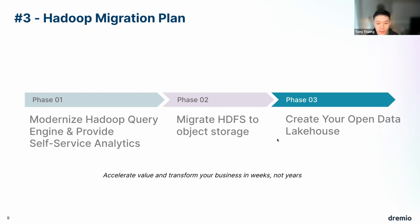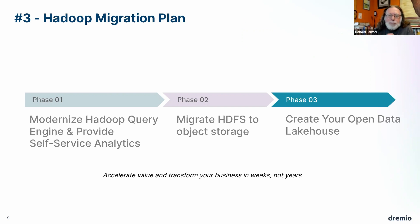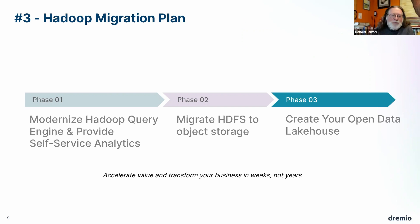We typically see customers go two routes for phase two: cloud object storage like AWS S3, or S3-compatible on-prem object storage. These migrations take time — not the next day you'll be fully migrated — but this approach maintains business continuity. Phase three is creating the open data lakehouse, which we'll go into more deeply.